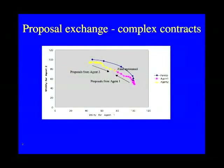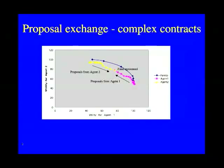If we apply standard techniques like proposal exchange to complex contracts, we find that the proposals made by the two parties, as they concede towards each other, tend not to trace the Pareto optimal line. This means that the parties end up with contracts which are worse from both of their perspectives than other contracts that do exist.